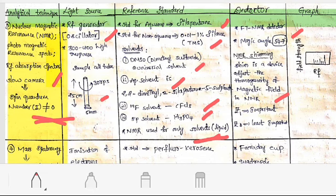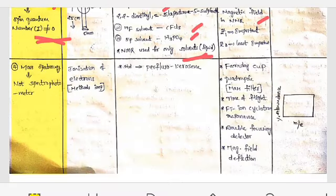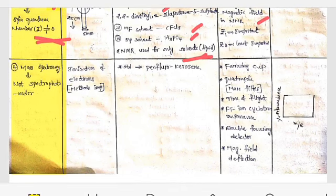Let us discuss mass spectroscopy. Mass spectroscopy is not a spectrophotometer. Up to now, what we discussed are all spectrophotometers using light as a source, but in mass spectroscopy we are not using light as a source. Here we are using ionization techniques, which are very important but not mentioned here - you have to go through them.